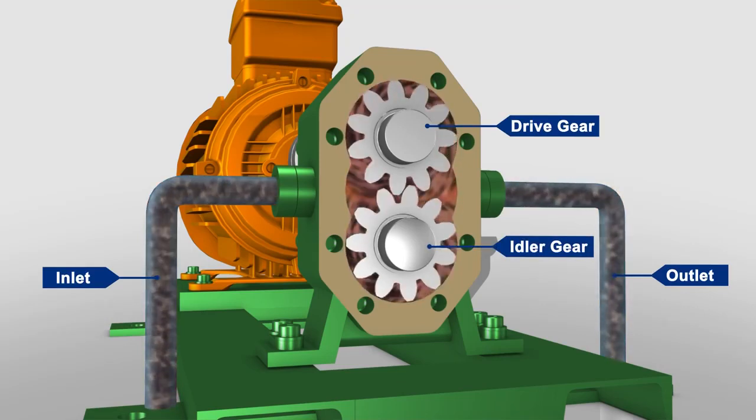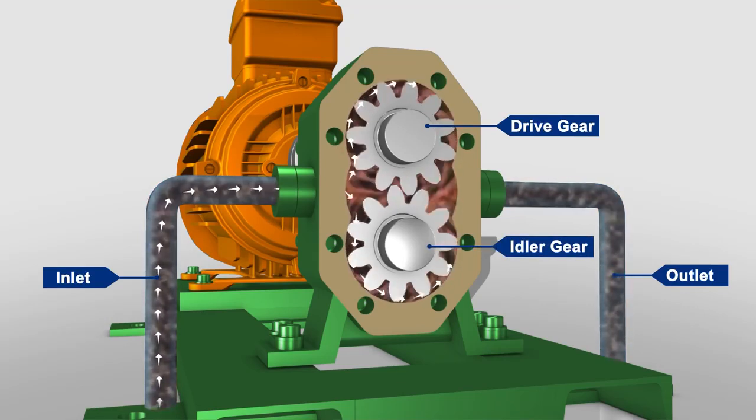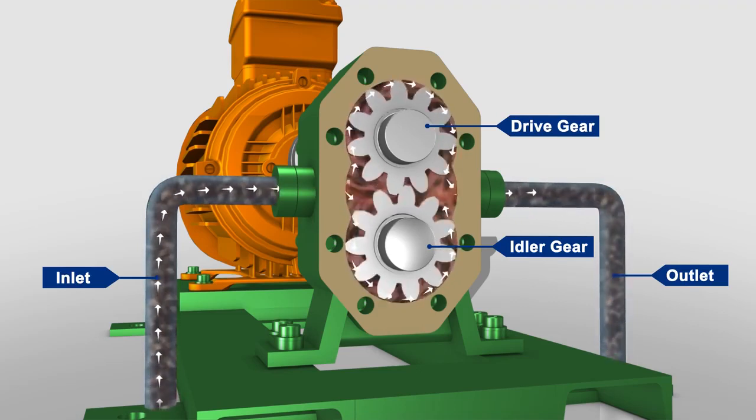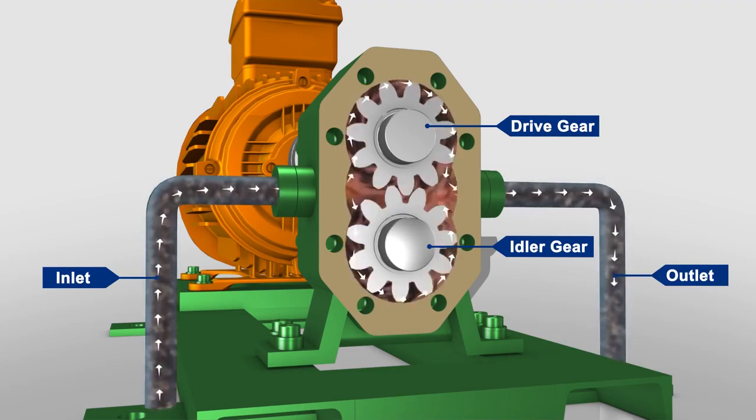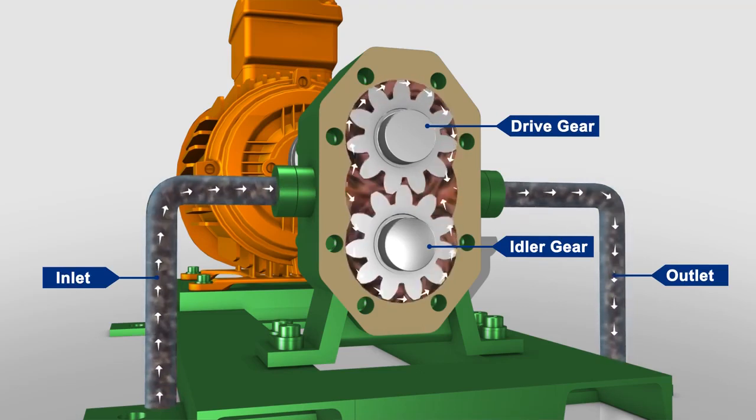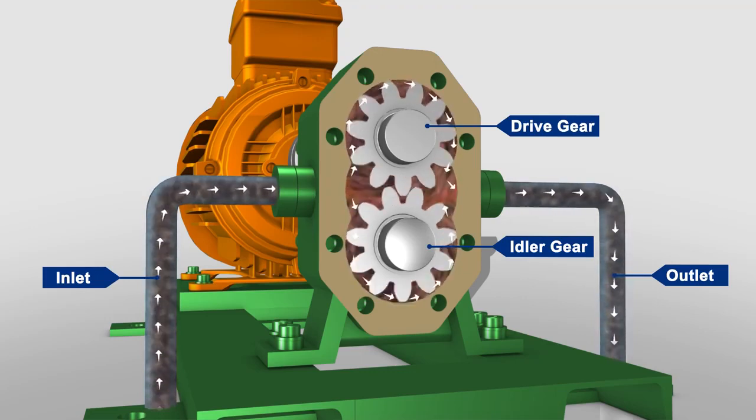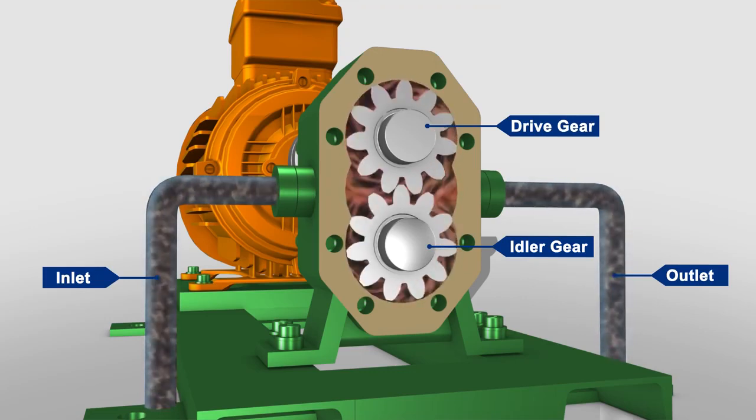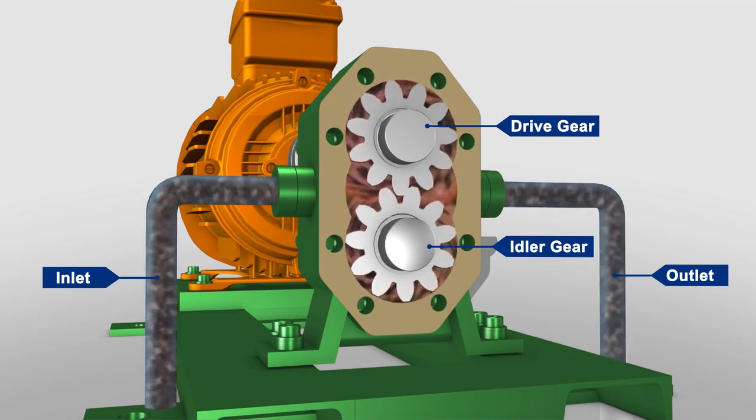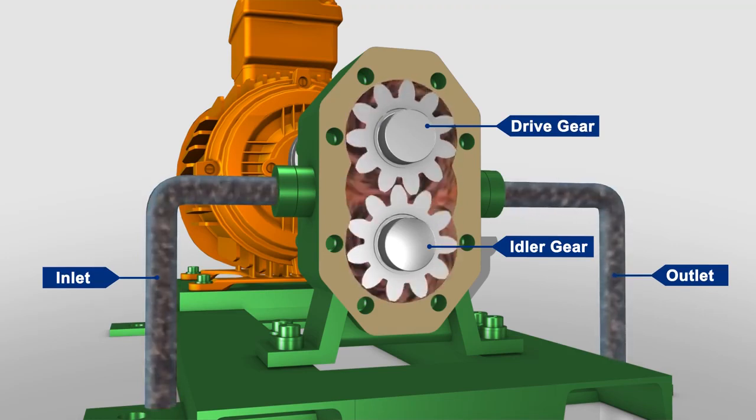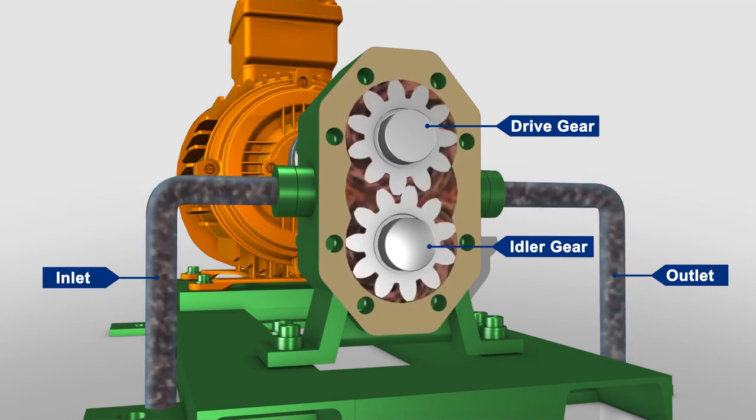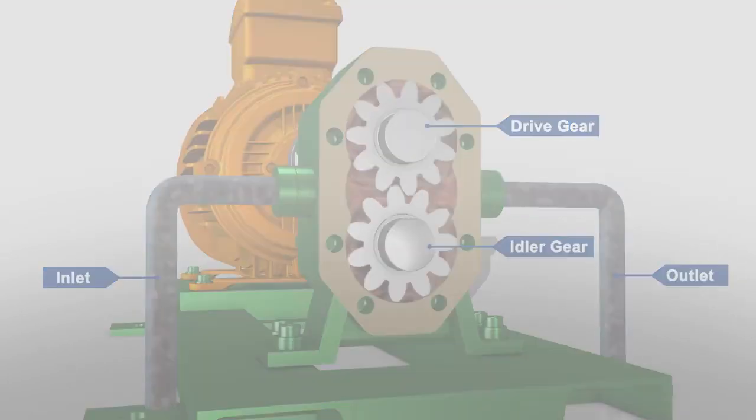When the gears rotate, the liquid, which is trapped in the gear teeth spaces between the housing bow and the outside of the gears, is transferred from the inlet side of the pump to the outlet side of the pump. The meshing of the gears on the discharge side of the pump forces the liquid out of the pump and into the discharge piping.